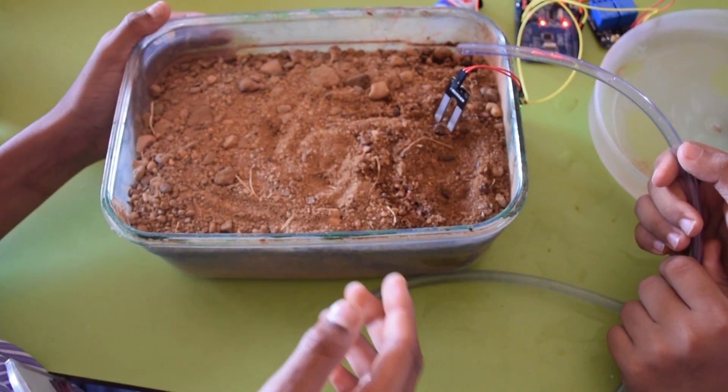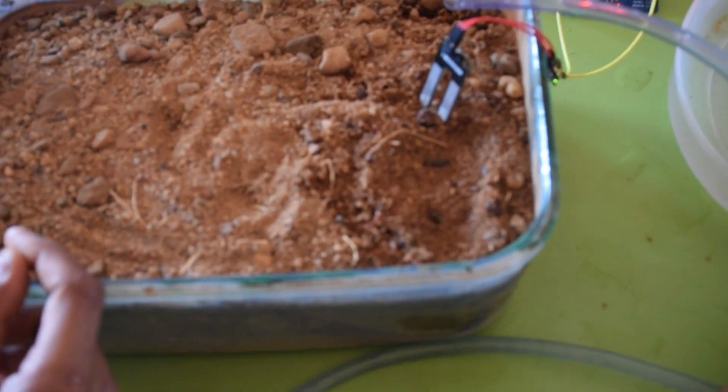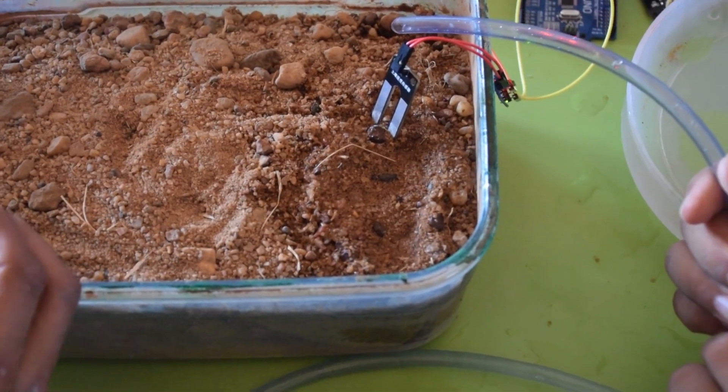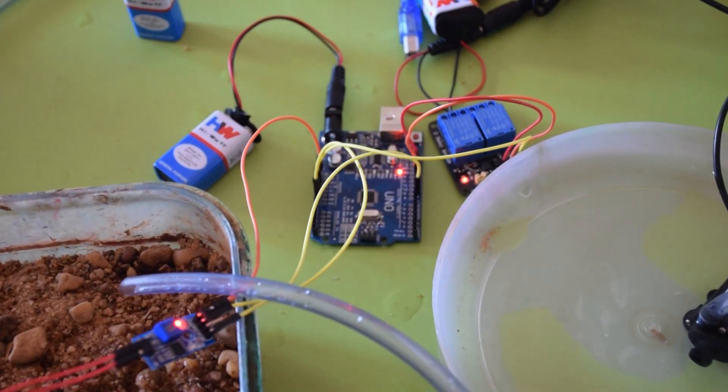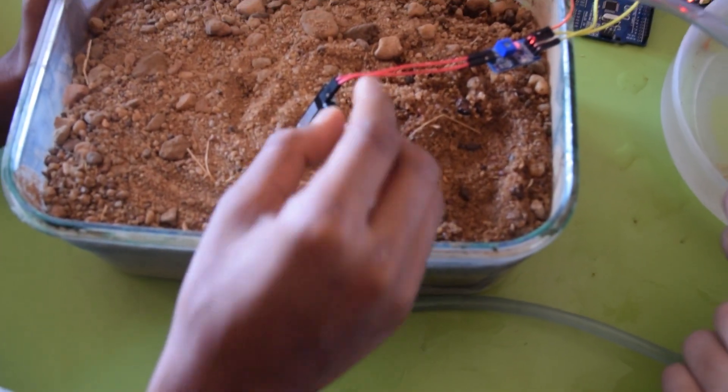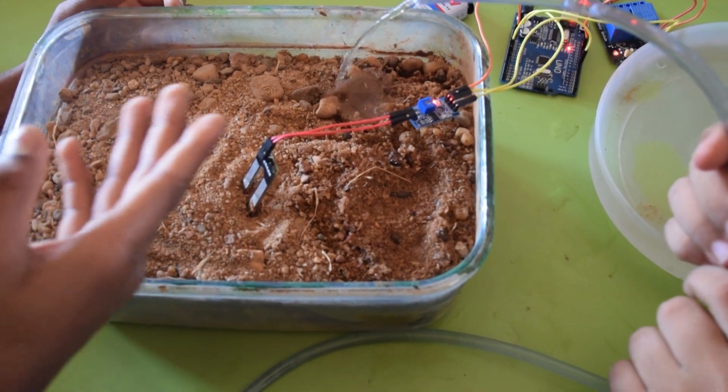As we can see, the moisture sensor is kept in the wet part of the soil and it is sensing moisture, so the relay is off. When I change it to the dry part, the pump turns on and it waters the fields.